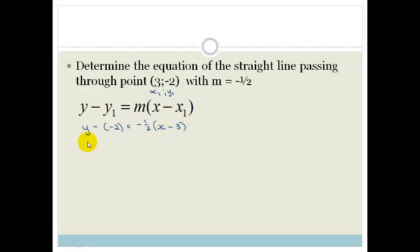Then we've got x minus 3. And then we just multiply it out. We go y minus times minus is a plus, is equal to minus a half x, minus times minus is a plus. And then that becomes 3 over 2.